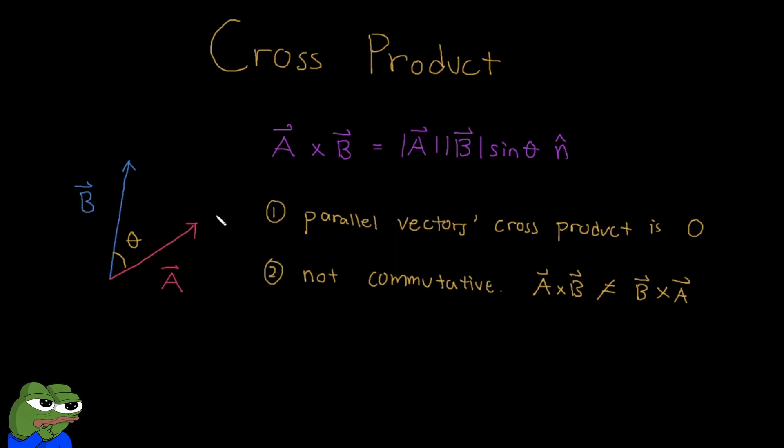If I do B cross A and I do right hand rule, I karate chop B, then I curl my hand going to A by passing through theta, right? And so you'll find that my thumb is actually pointing into the page. And so A cross B is not B cross A.